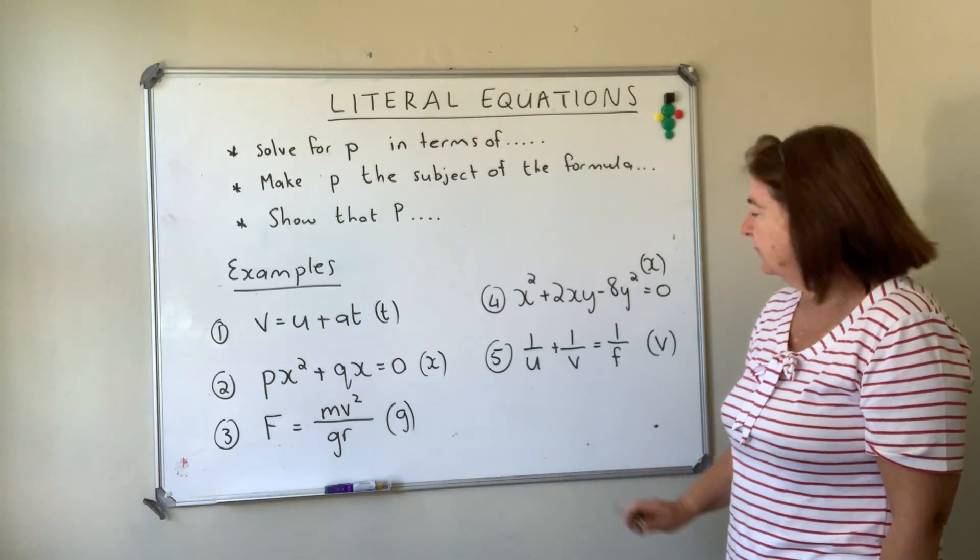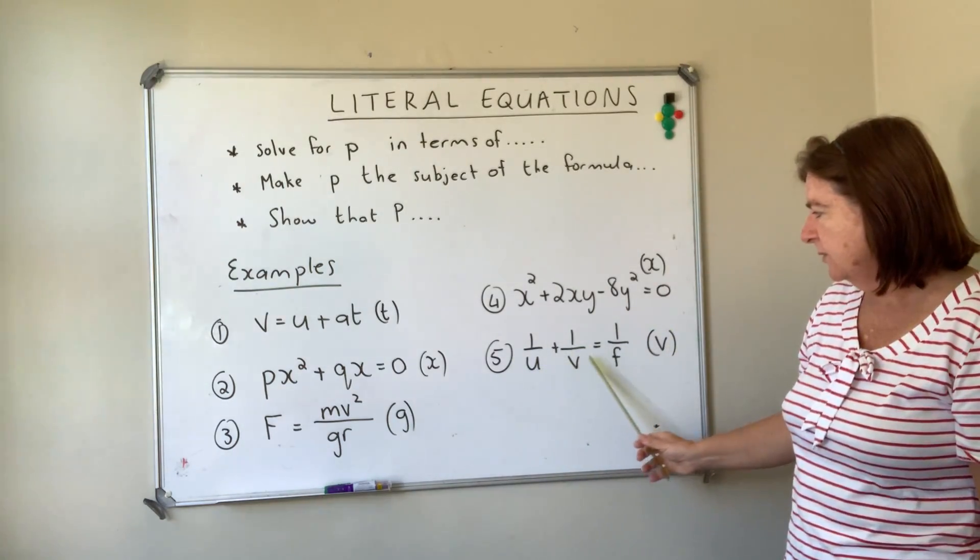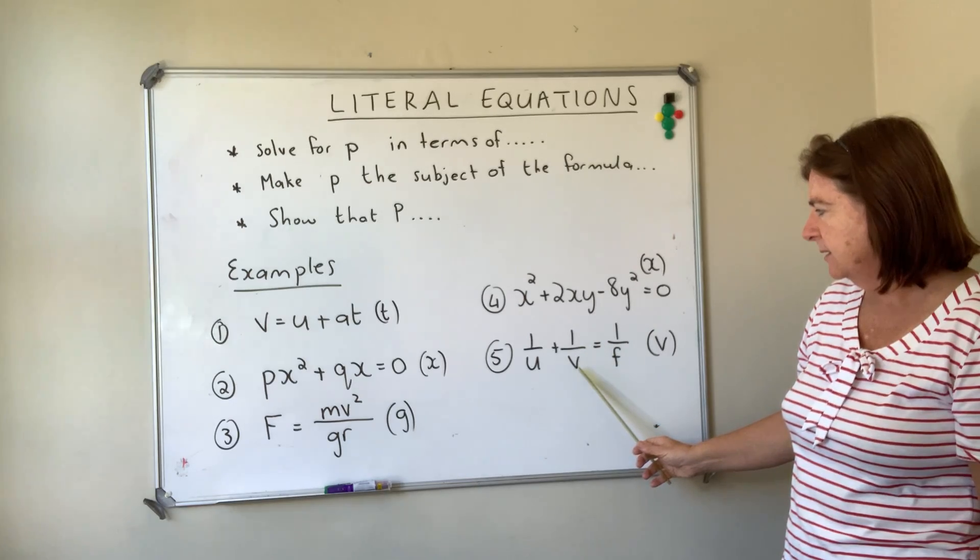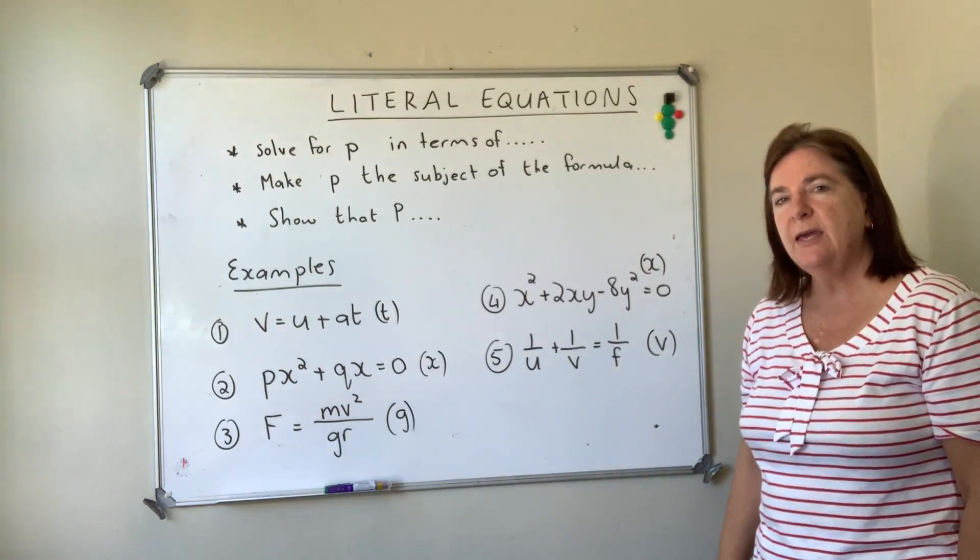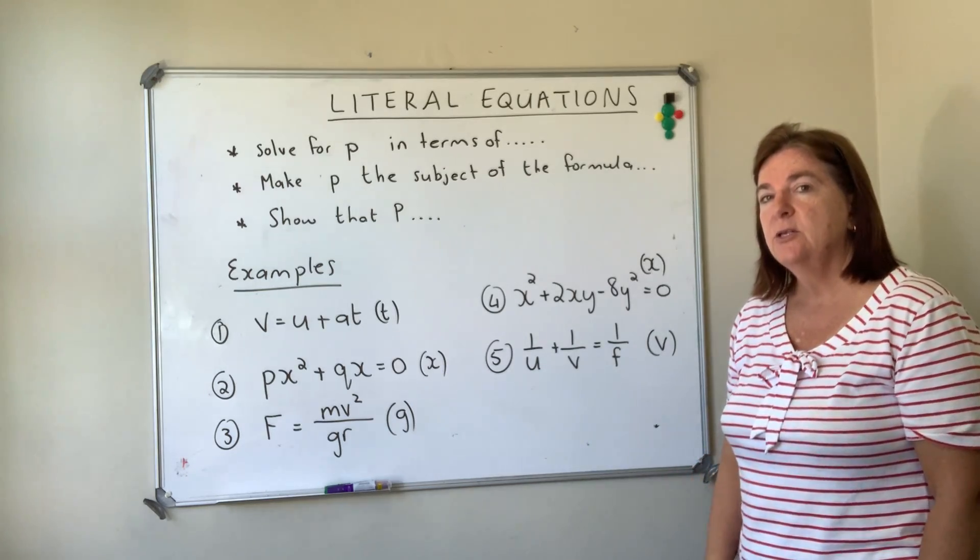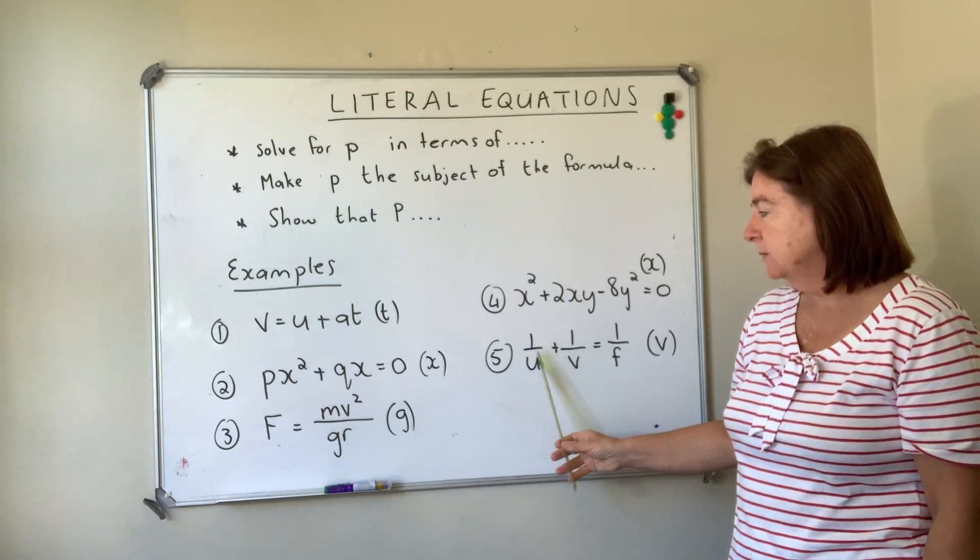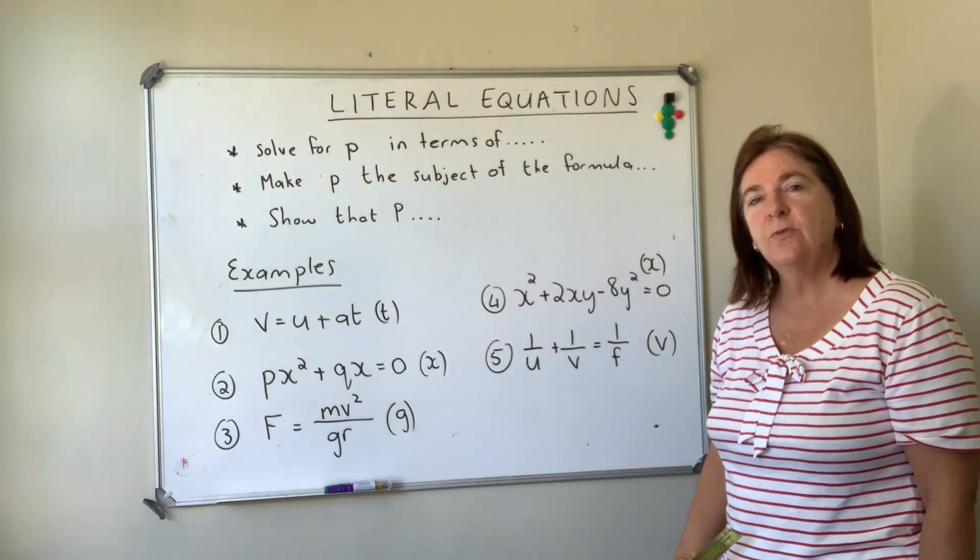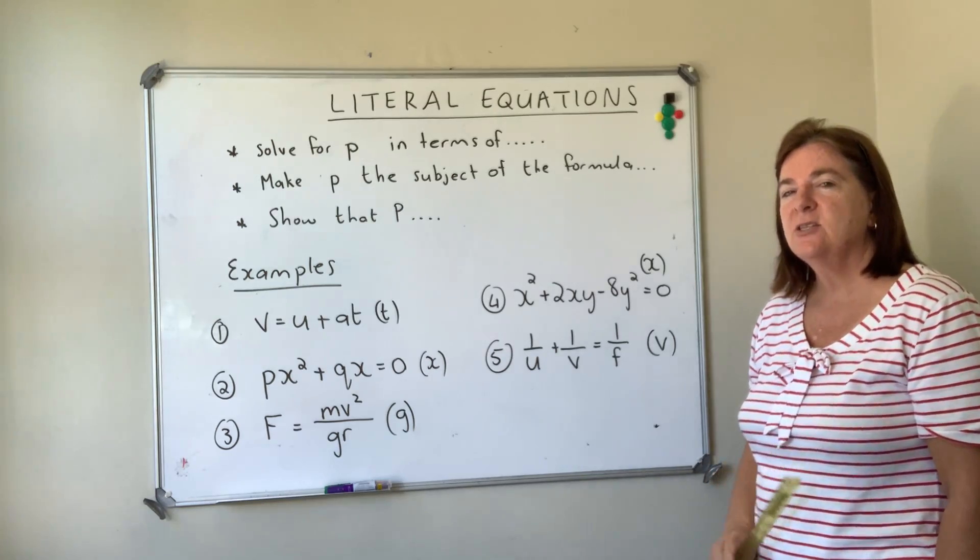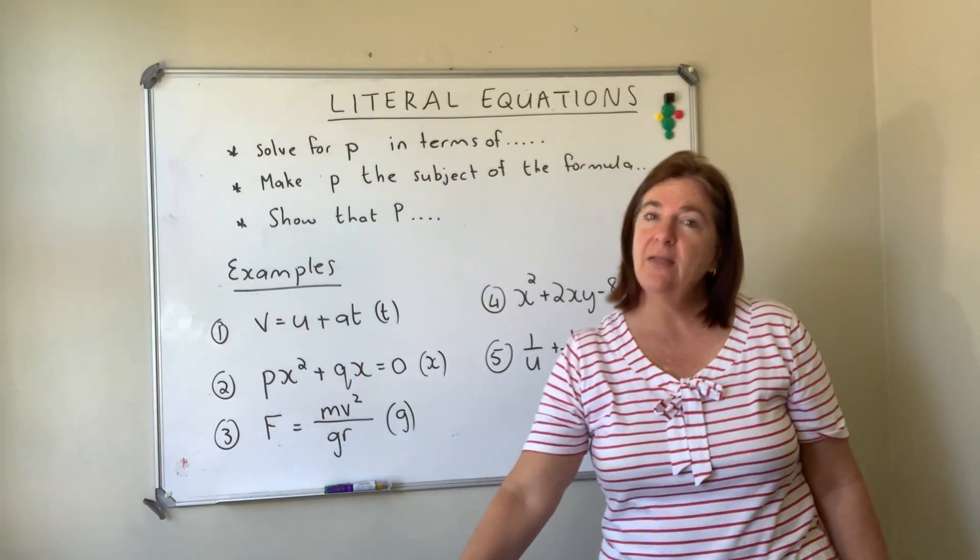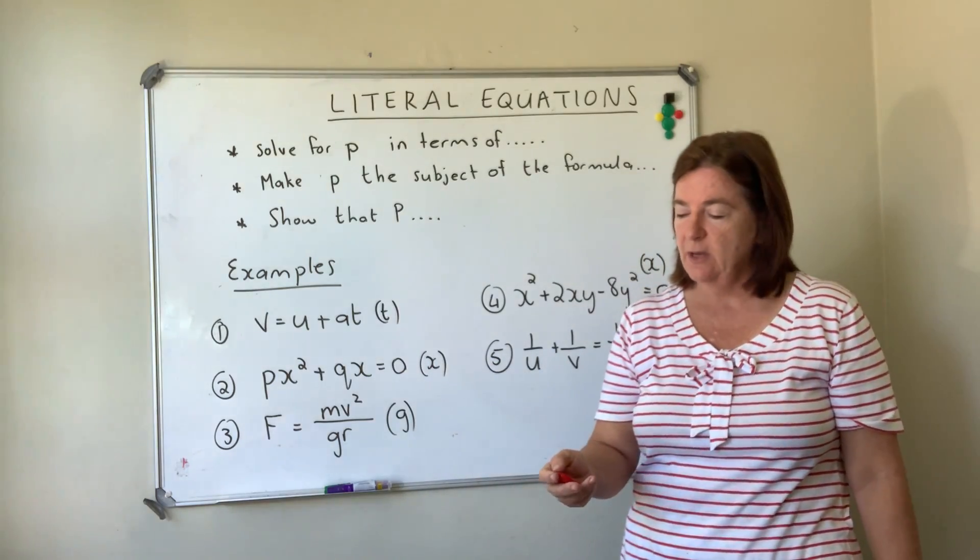Number five, we need to solve for v and v is stuck over there. It's in the denominator, so the first thing we would want to do is to get it to the top. So what do we do when we have equations with fractions? Yes, we've got to find the LCD and then multiply each term by the LCD. Okay, so this is the end of this first video and then we're going to do the solutions of each of these with the next video. Bye.